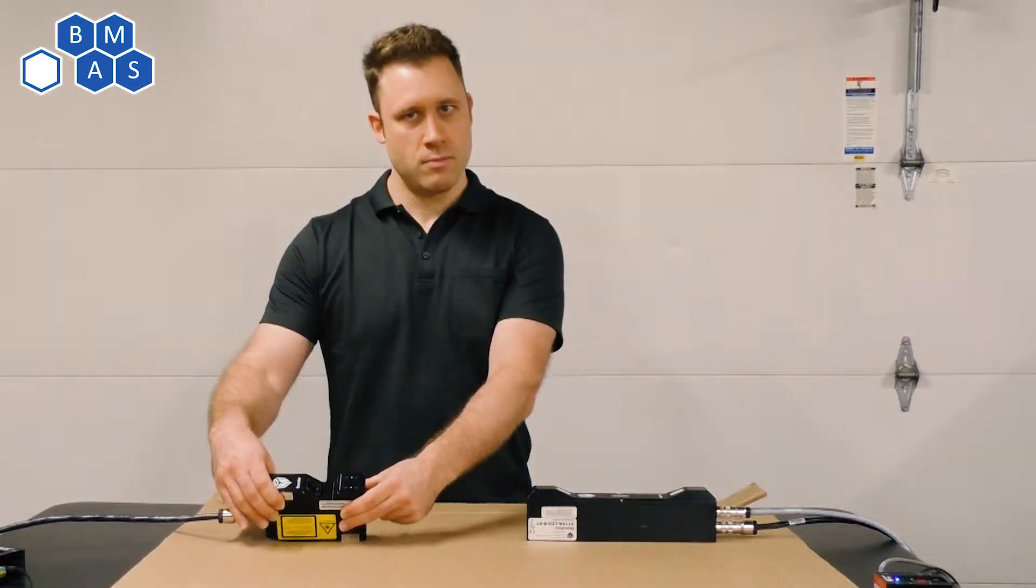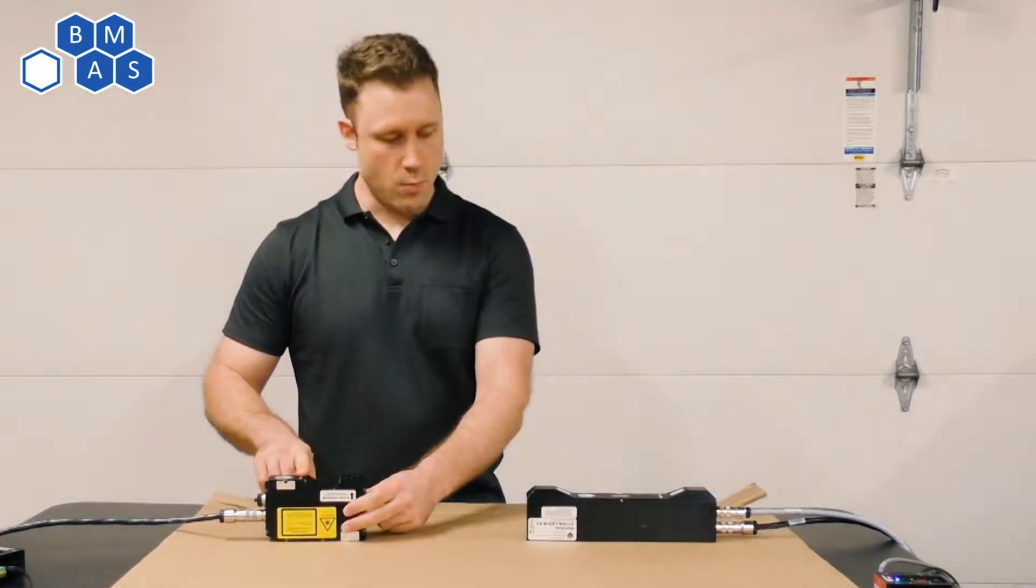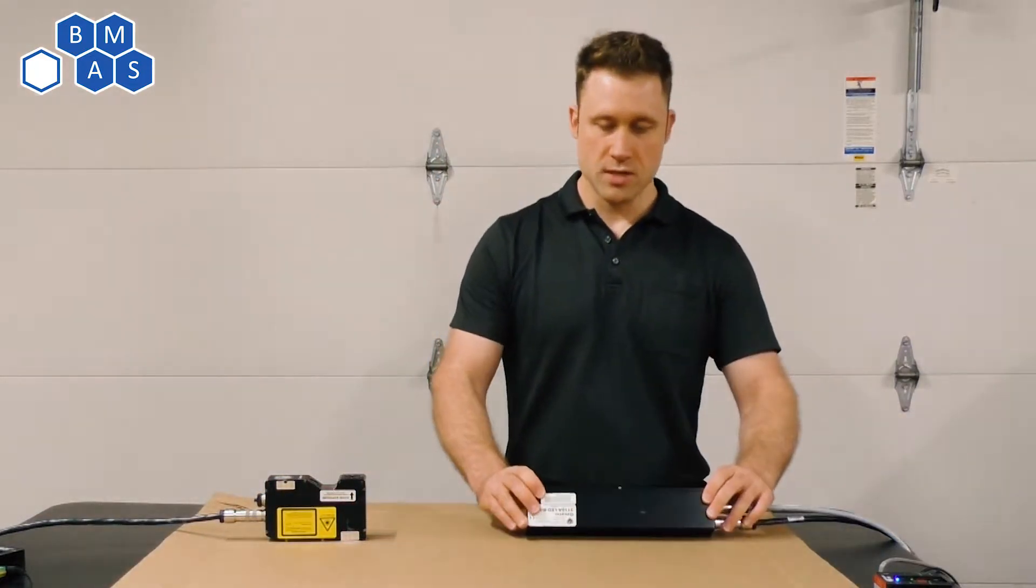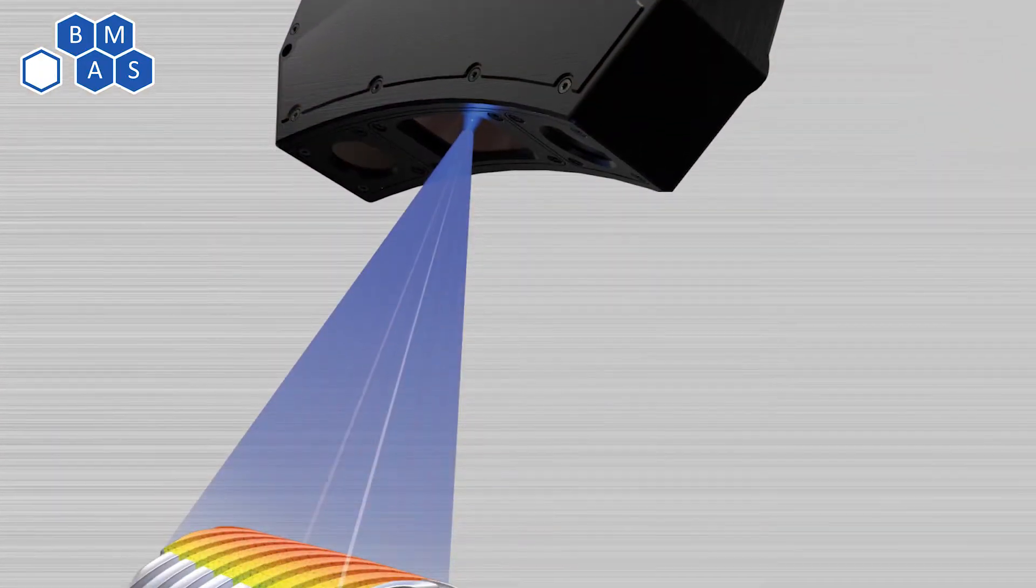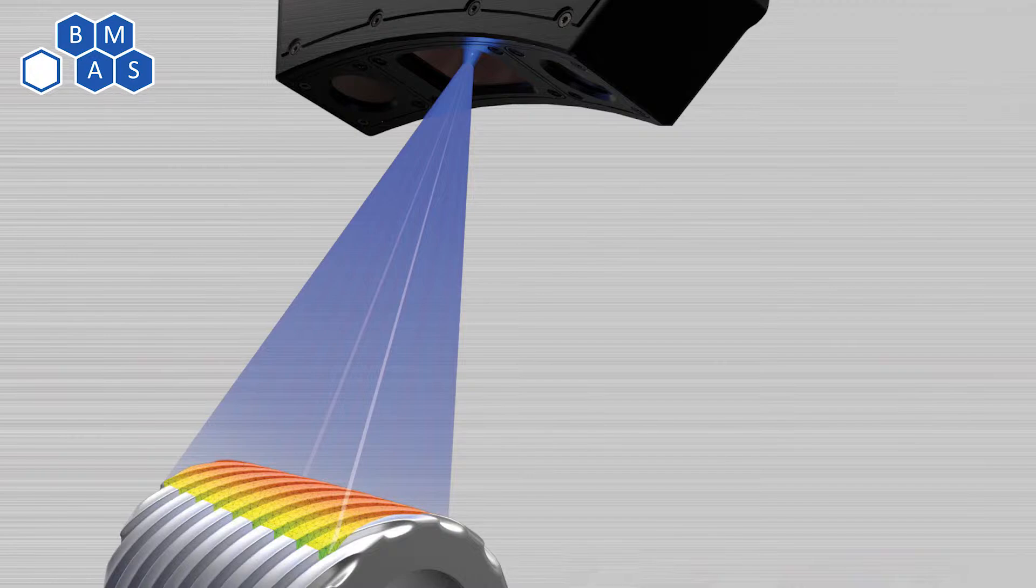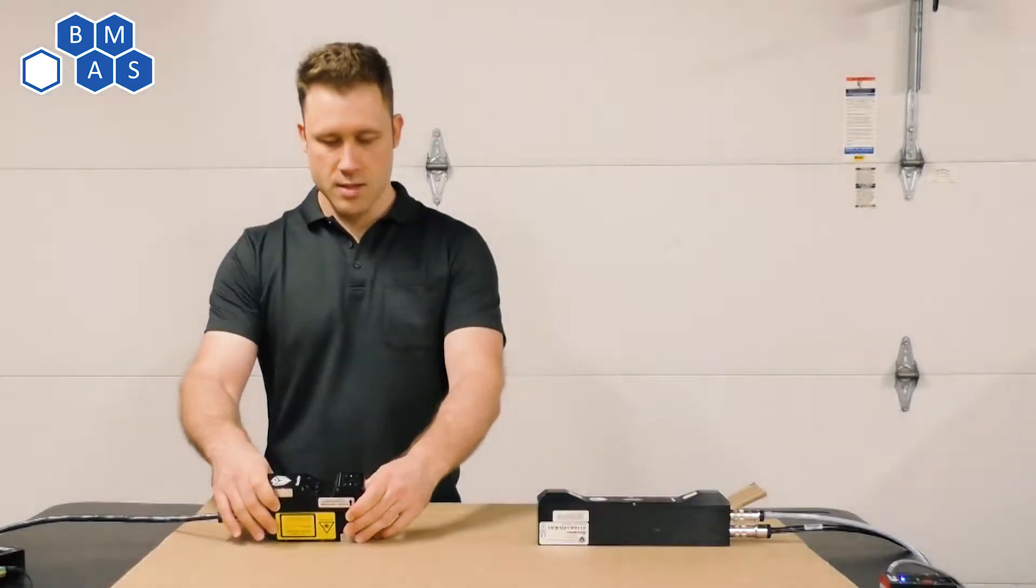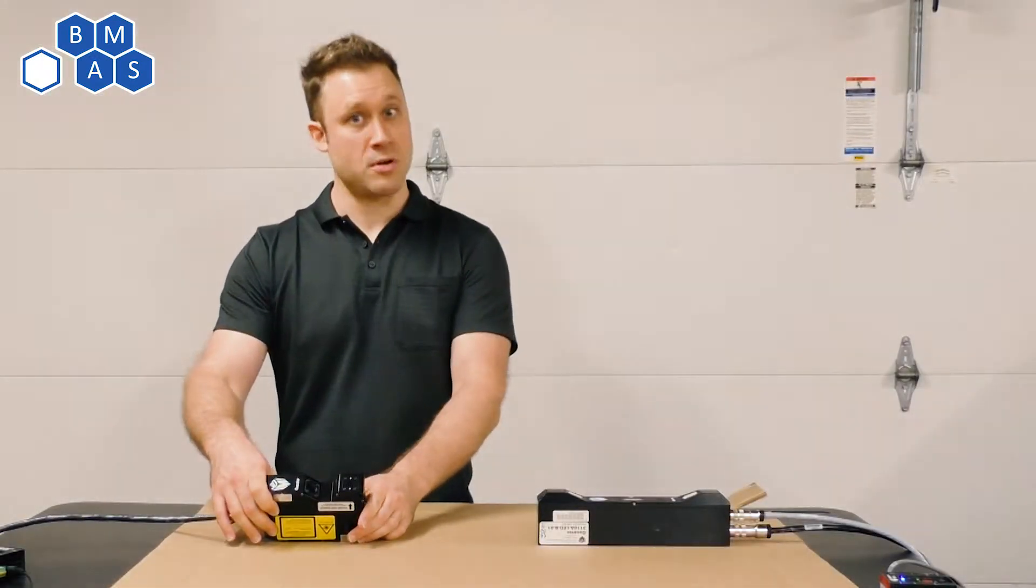This one uses a laser line and it has one camera. This one uses what we call structured light and I'll talk about what that is in a minute. I'm going to start with the laser because this is probably the most common. It's the simplest to understand and it's a really good starting point for us.